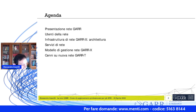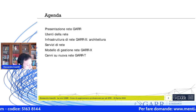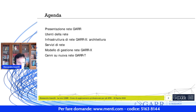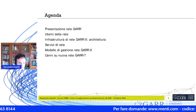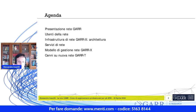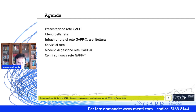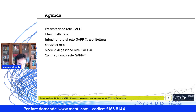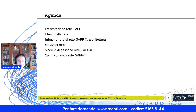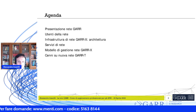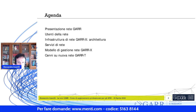L'agenda è così strutturata: vi introdurrò la rete GAR e gli utenti con le loro peculiarità, poi scenderemo in dettaglio sull'architettura di rete e le sue componenti principali. Descriveremo i servizi di rete — prettamente di rete, non quelli applicativi, che avranno altri moduli dedicati. Vedremo come funziona e come è gestita l'attuale infrastruttura GAR-X. Infine farò un cenno alla nuova infrastruttura GAR-T, in fase di implementazione, che prenderà il posto dell'attuale GAR-X.